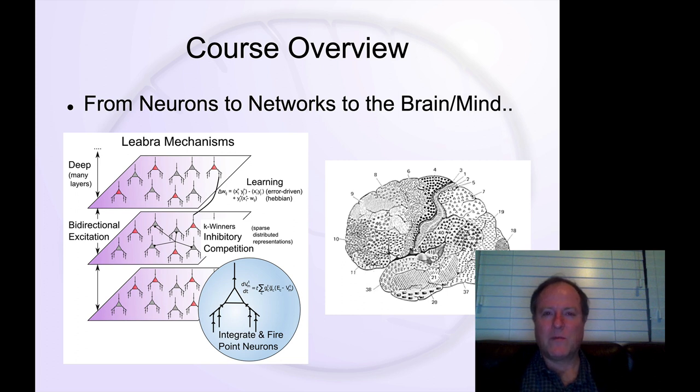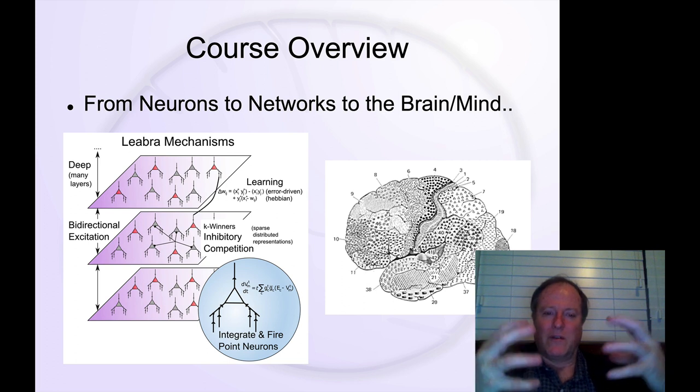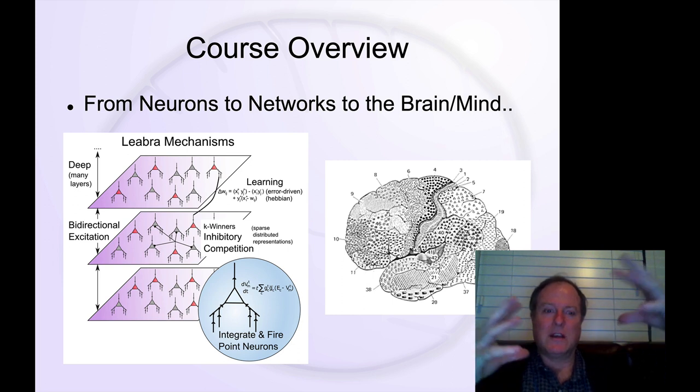Those are two really important principles that we think about in chapter three, looking at networks of interacting neurons. These are really key places where interactions between neurons working together produce something that's greater than the individual neuron. Emerging complex cognitive abilities come out of those interactions between these individual neurons.